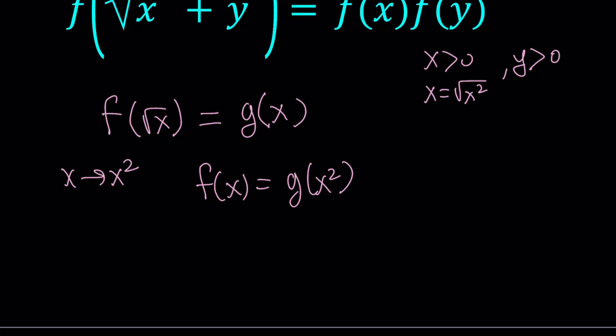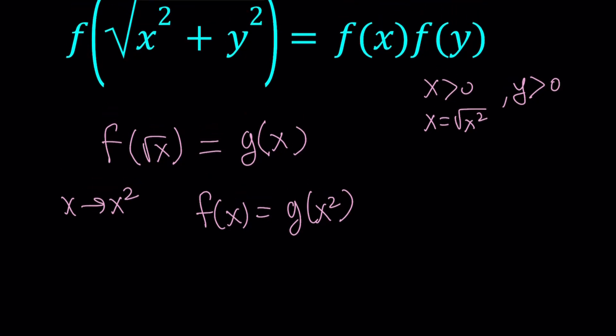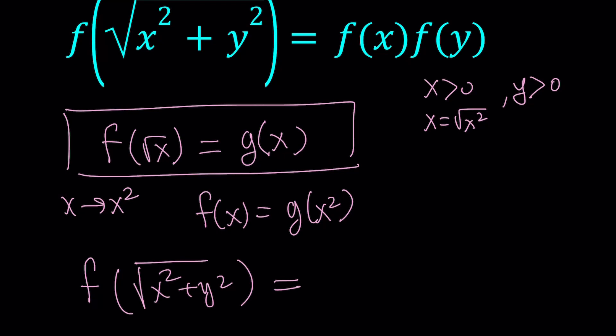Let's go ahead and replace x with x squared on both sides. That gives us f of x equals g of x squared. Awesome. This is also good because we completely got rid of the square root symbol. Now, under these conditions, let's go ahead and make the substitutions in our original equation. So we know that f of square root of something equals g of that thing. So f of square root of x squared plus y squared should equal g of x squared plus y squared.